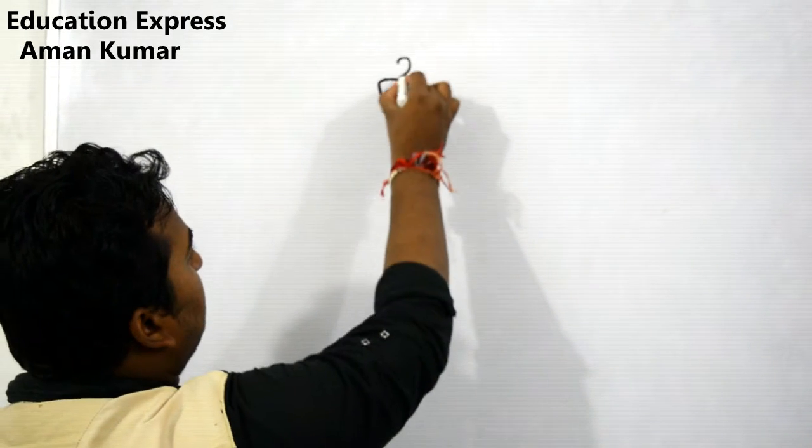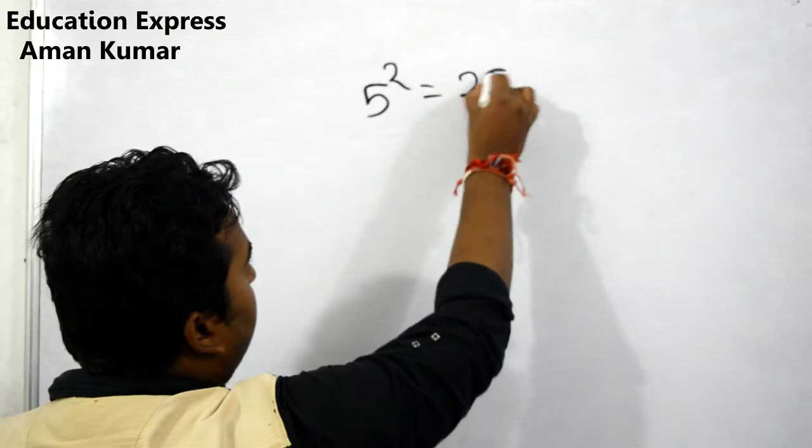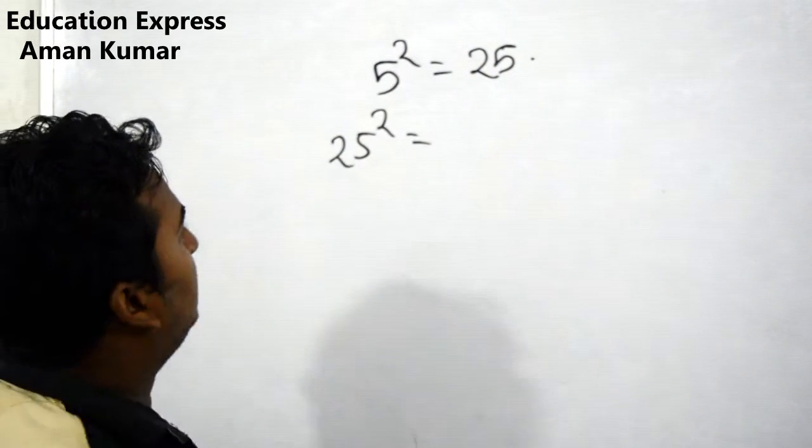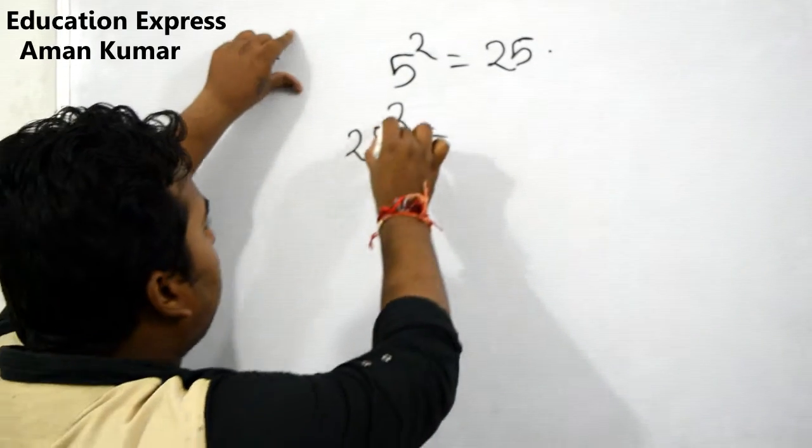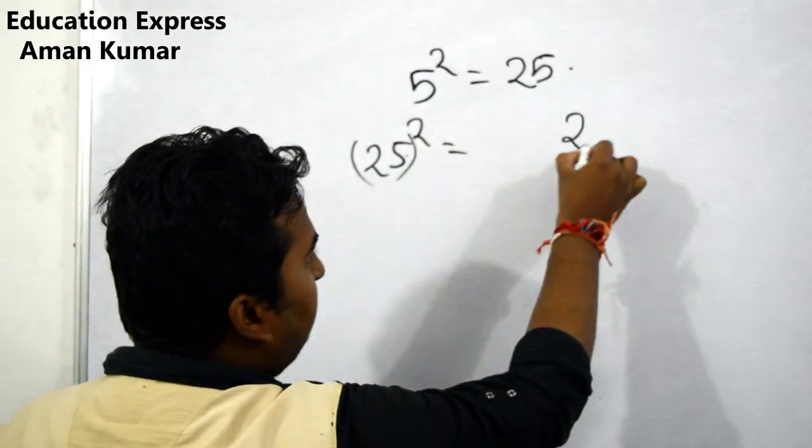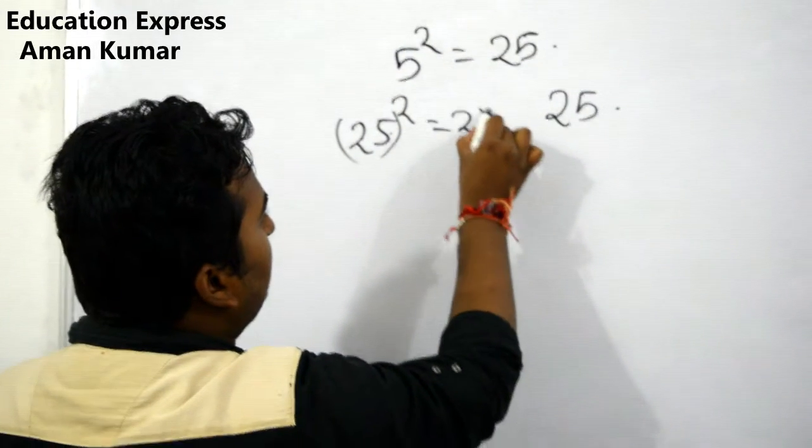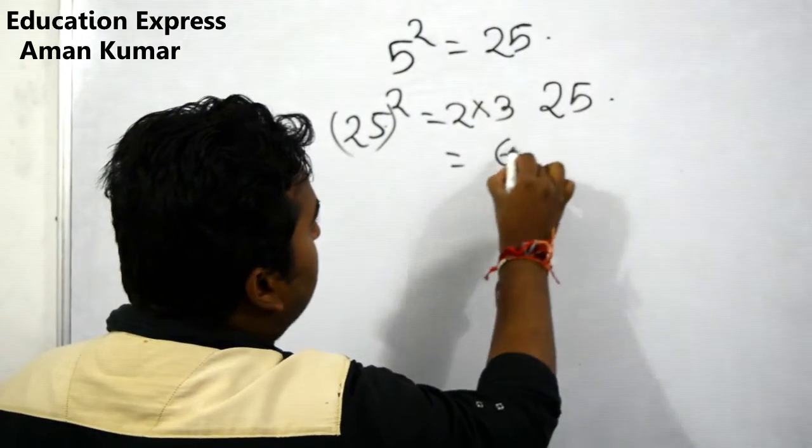We know that 5 squared equals 25, but how to find 25 squared? 25 squared means 5 squared is 25, then 2 into 3. 2 into 3 equals 6, so 625.